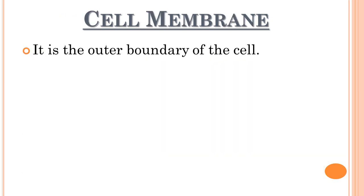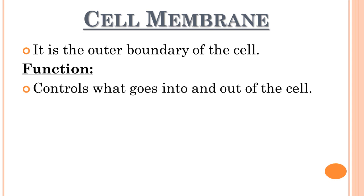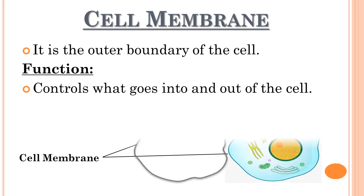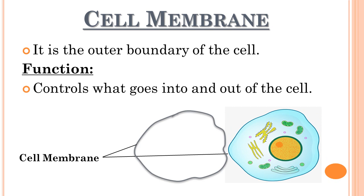Now we will discuss these three basic features of the cell in detail. Let's begin with the cell membrane. The cell membrane is the outer boundary of the cell. Its function is to control which material goes into the cell and what is required to be released from the cell. It acts like a security guard — like a bowl which can hold everything inside it.